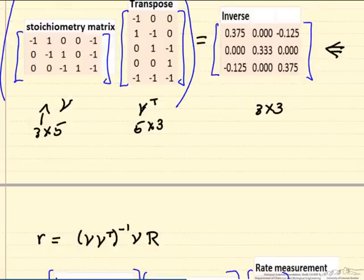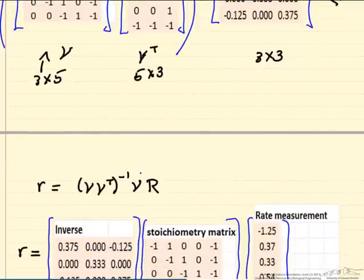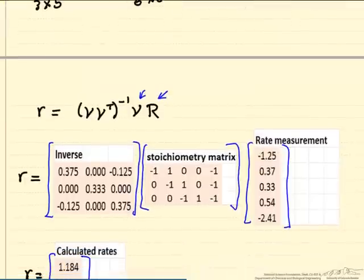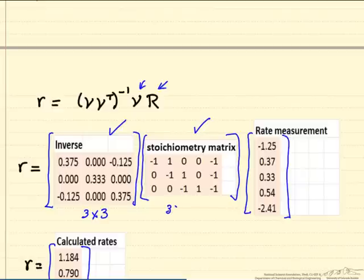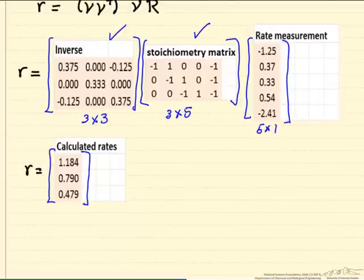So once we have this inverse, we multiply it again by the stoichiometric coefficient, and then by the measured rate matrix. So here's the inverse again. Stoichiometric coefficient, this is a 3 by 3, this is a 3 by 5, we multiply, and then this is a 5 by 1. So we end up with this 3 by 1 matrix, where these are the calculated rates.